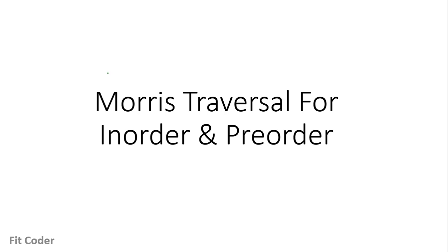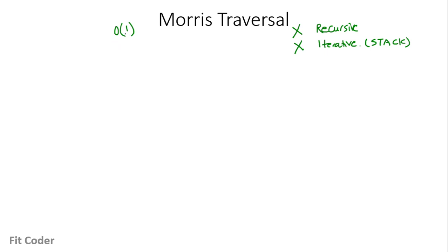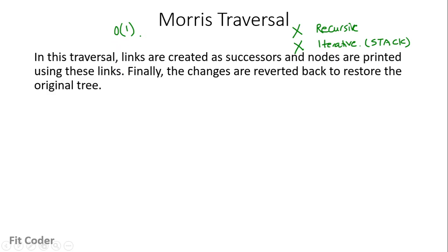The topic for this video is Morris traversal. So far the traversal techniques we have seen are recursive and iterative. Iterative techniques use a stack. In Morris traversal we do not use recursion and we do not use a stack, so the space complexity in Morris traversal is O(1). Basically what we do here is we create links to the successors and then print the nodes using those links, so we are changing the structure of the tree so that we can traverse it, and later we will remove those links so that the original tree structure is maintained.